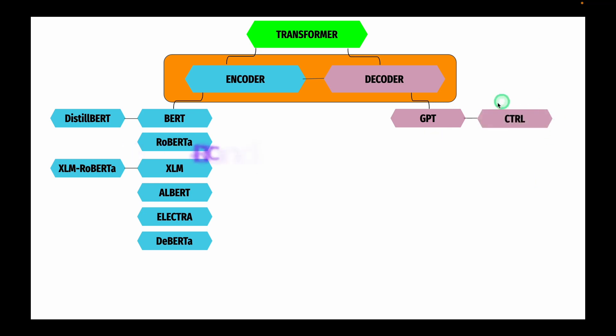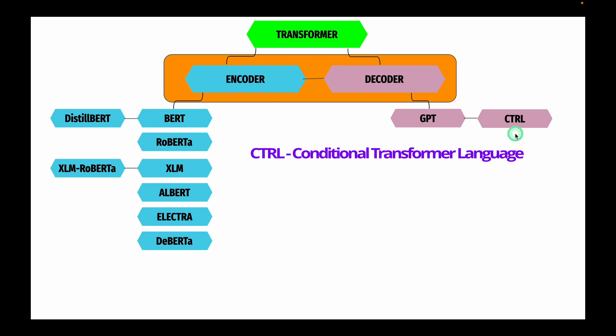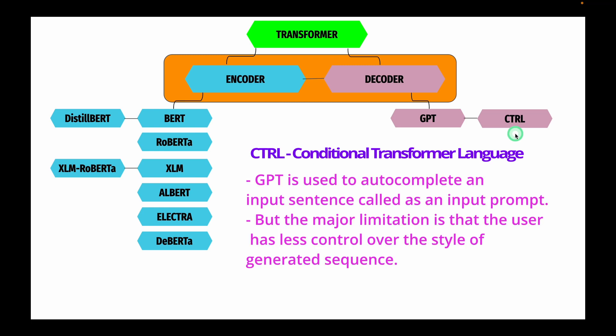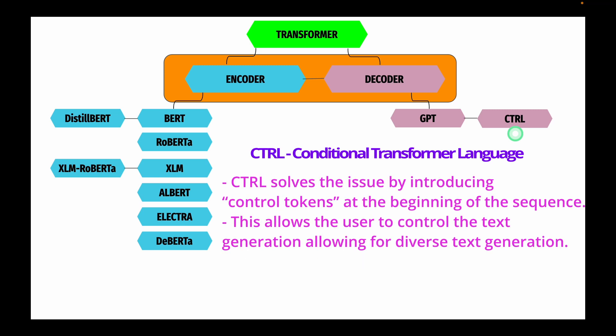The next decoder model is CTRL, which stands for Conditional Transformer Language. GPT is used to auto-complete text given an input prompt, but the major limitation is that users have very little control over the style of the generated sequence. CTRL addresses this issue by introducing control tokens at the beginning of the sequence, allowing the user to control text generation and enabling diverse text generation.